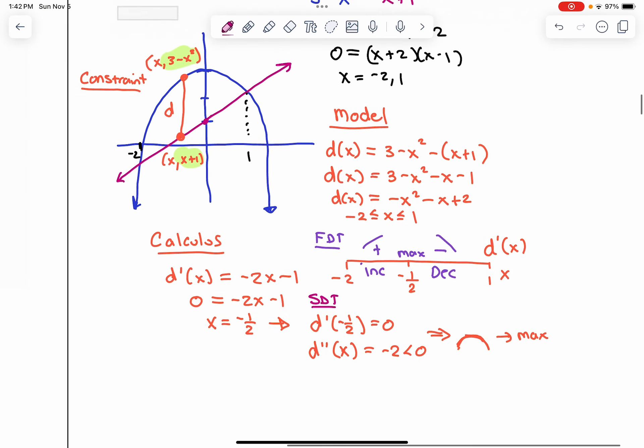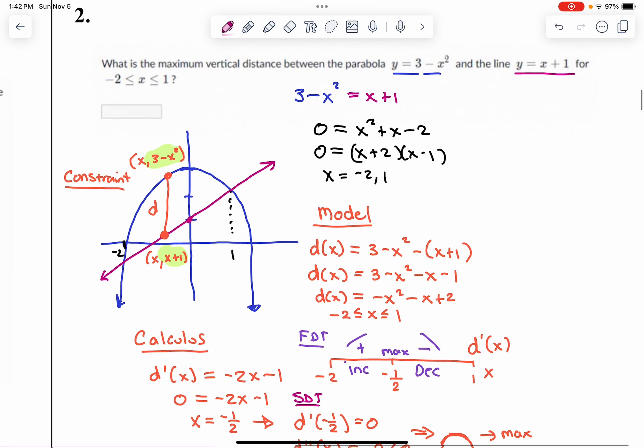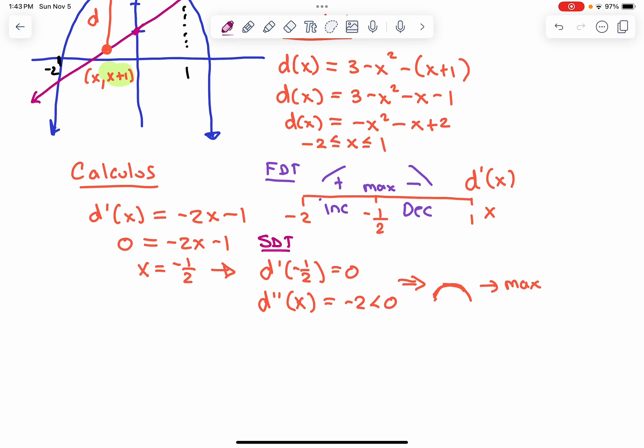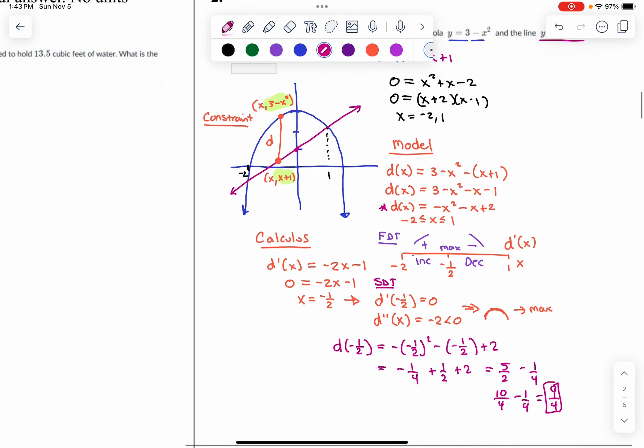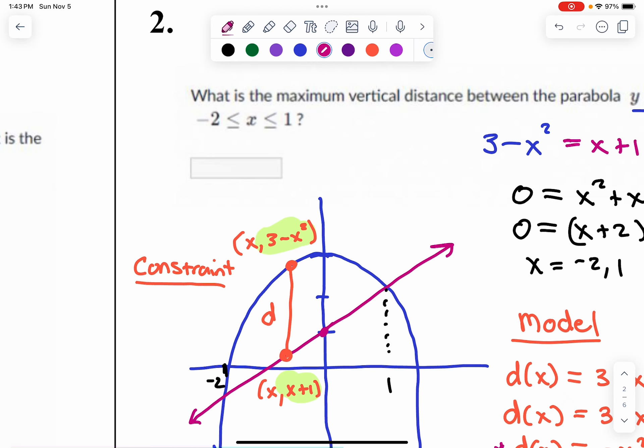So we're confident that this max distance is happening at negative 1 half. What's the question again? What is the maximum vertical distance? Well, I would just go back to our function that models our vertical distance. And we plug in our negative 1 half. So d of negative 1 half is negative 1 half squared minus negative 1 half plus 2. It's negative 1 fourth plus 1 half plus 2. Or 2 and 1 half is 5 halves minus 1 fourth, which is 10 fourths minus 1 fourth, which is 9 fourths. So the maximum vertical distance between those two curves is 9 fourths. It's also 2.25 if you use decimals. And that is our answer.